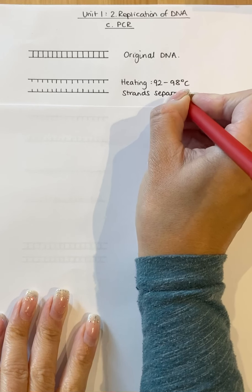So as with normal DNA replication, the strands have to separate and that is due to the hydrogen bonds between the bases breaking.